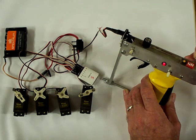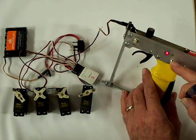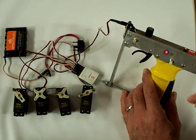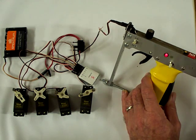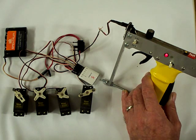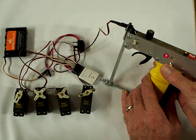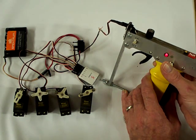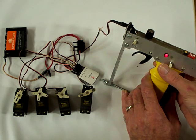For the little toggle on the side for channels three and four, rather than having them just toggle the servo, if you switch it, it will make it more proportional like the throttle.